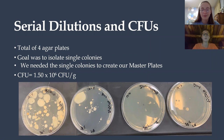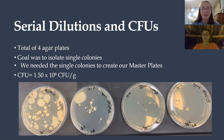We completed serial dilutions and ended up with a total of four agar plates. Our goal was to isolate single colonies and we needed these single colonies to create our master plates. We used the 10 to the negative 4 plate to calculate the CFU, which was 1.5 times 10 to the 6 CFU per gram.